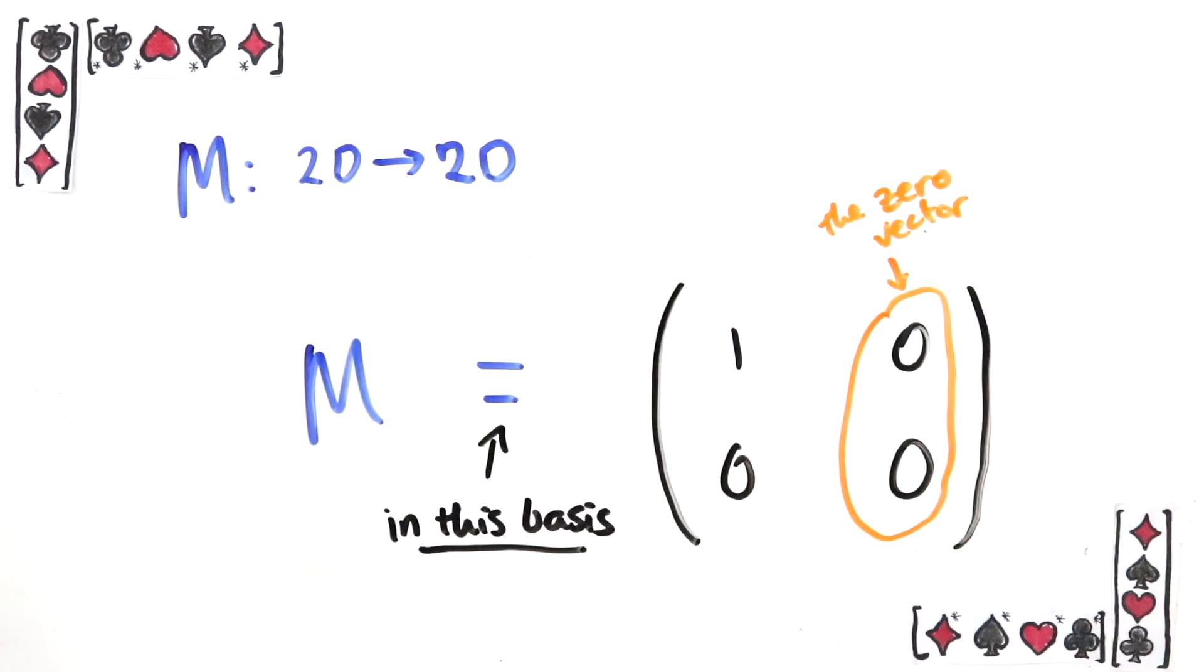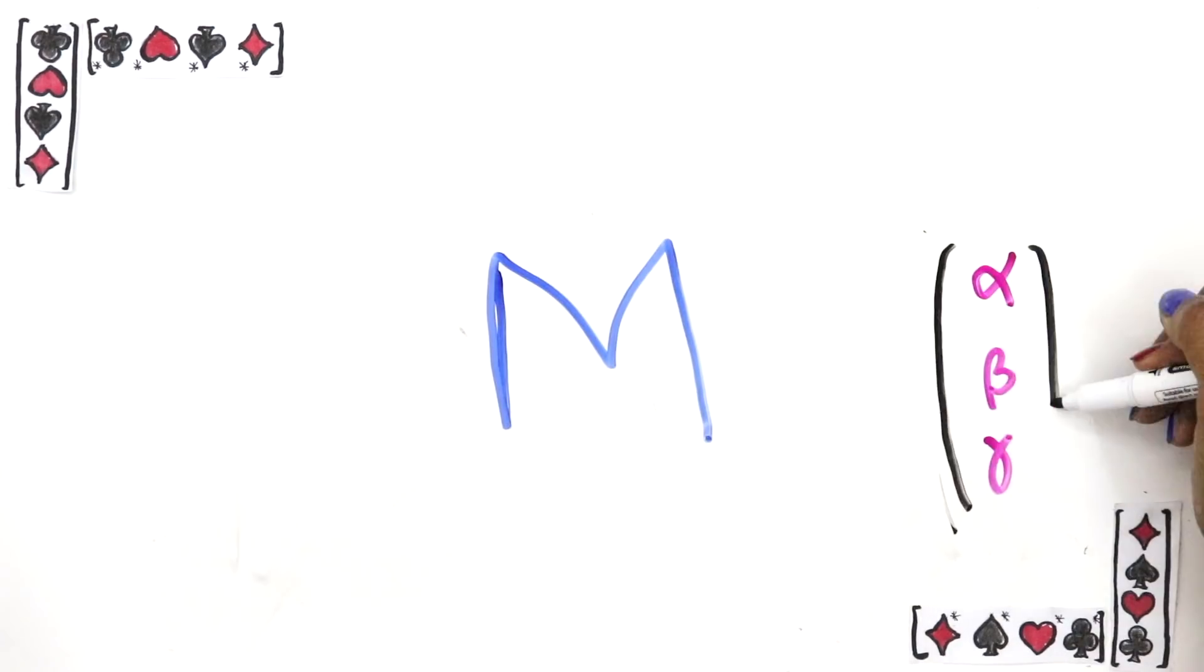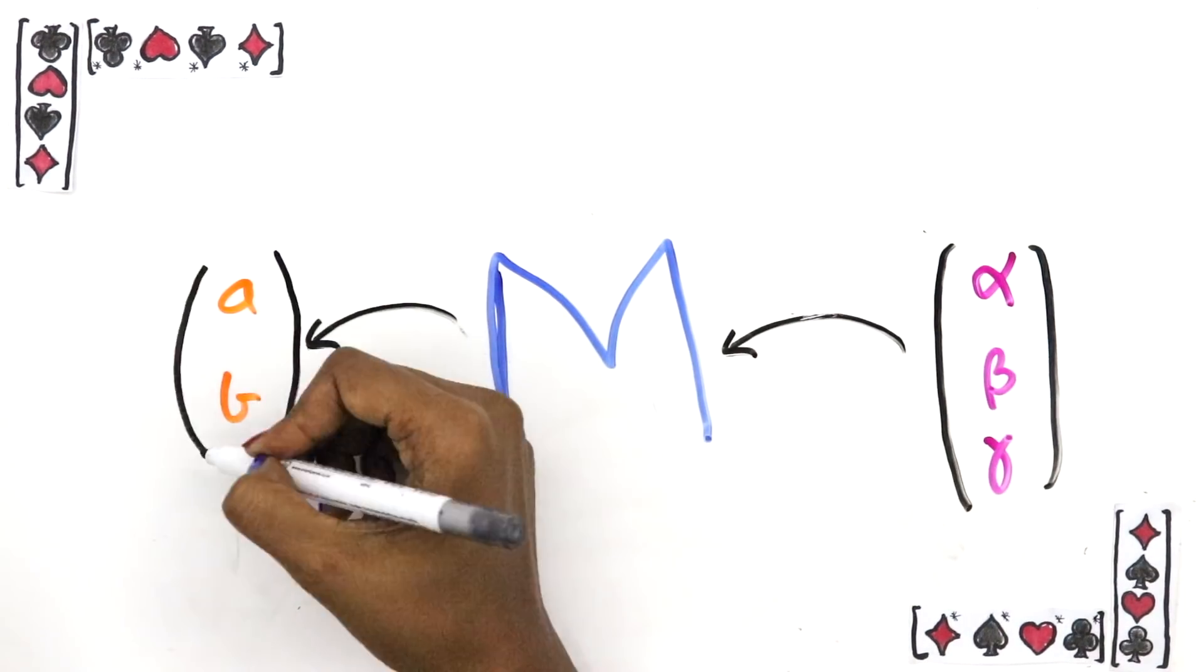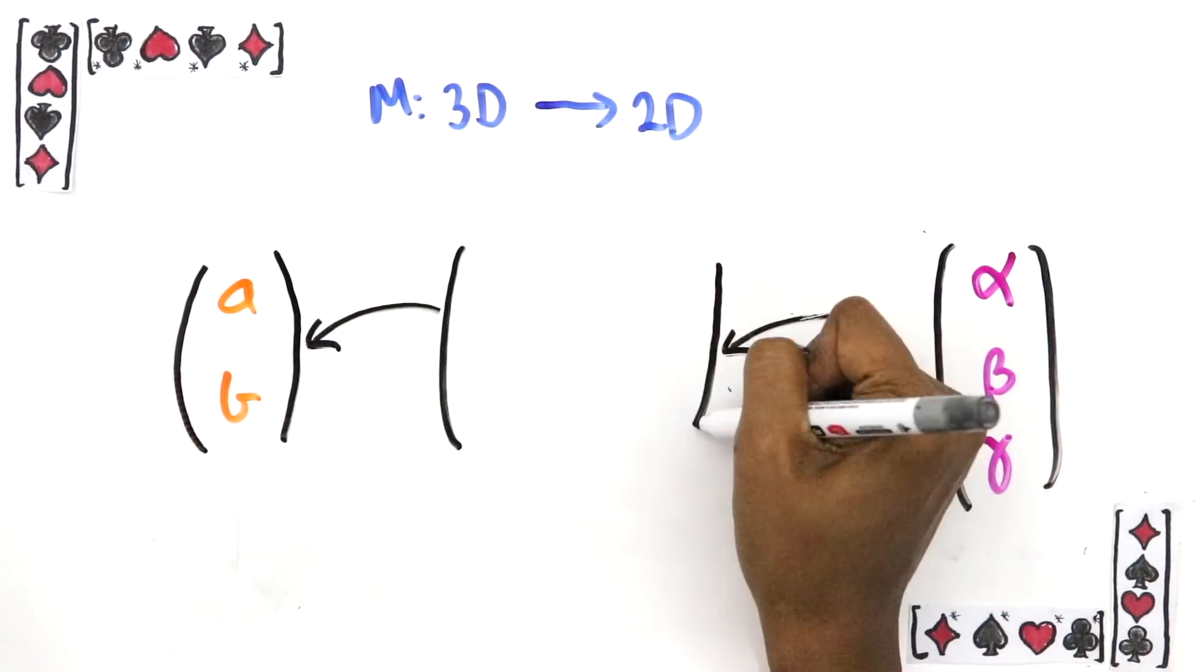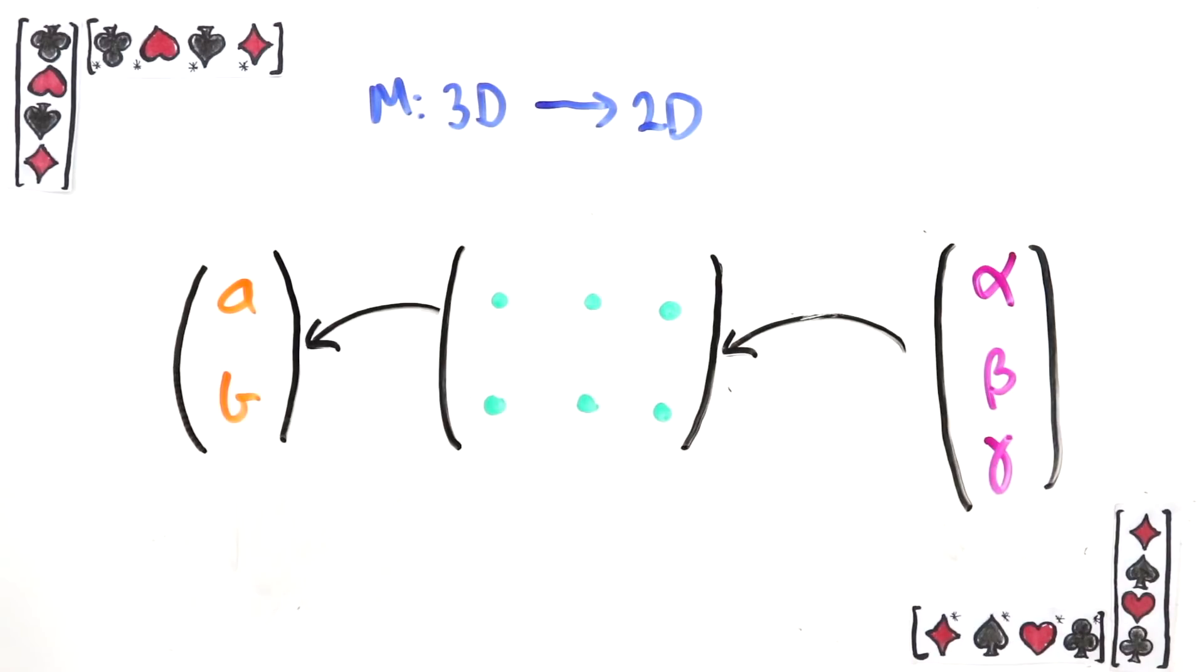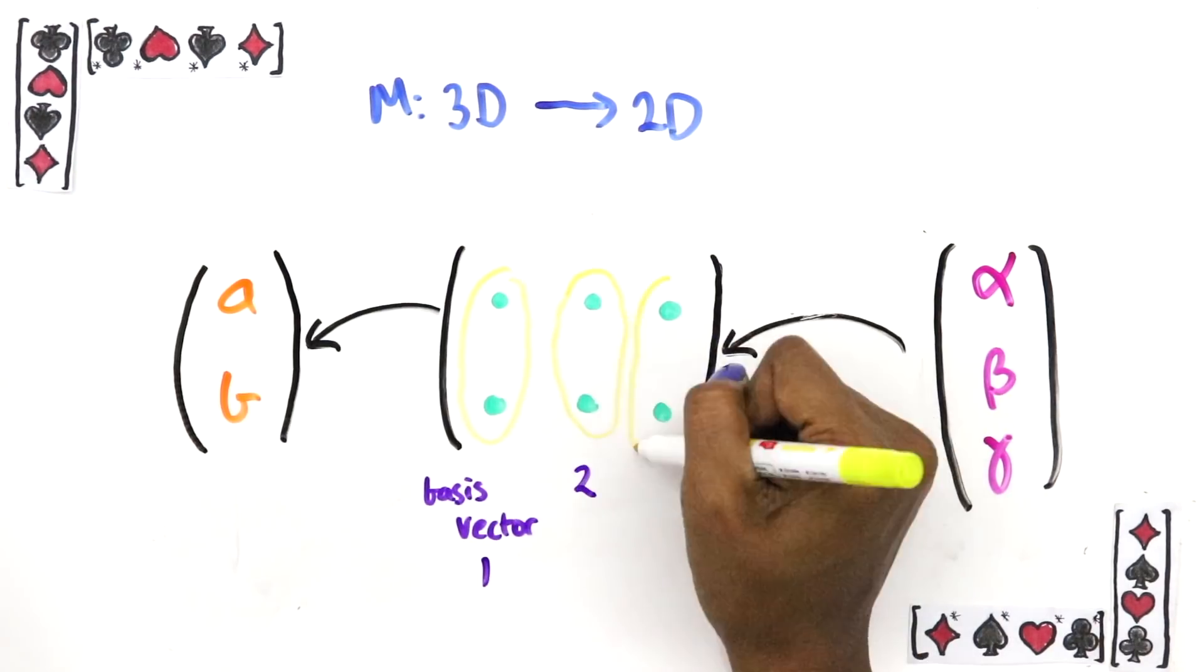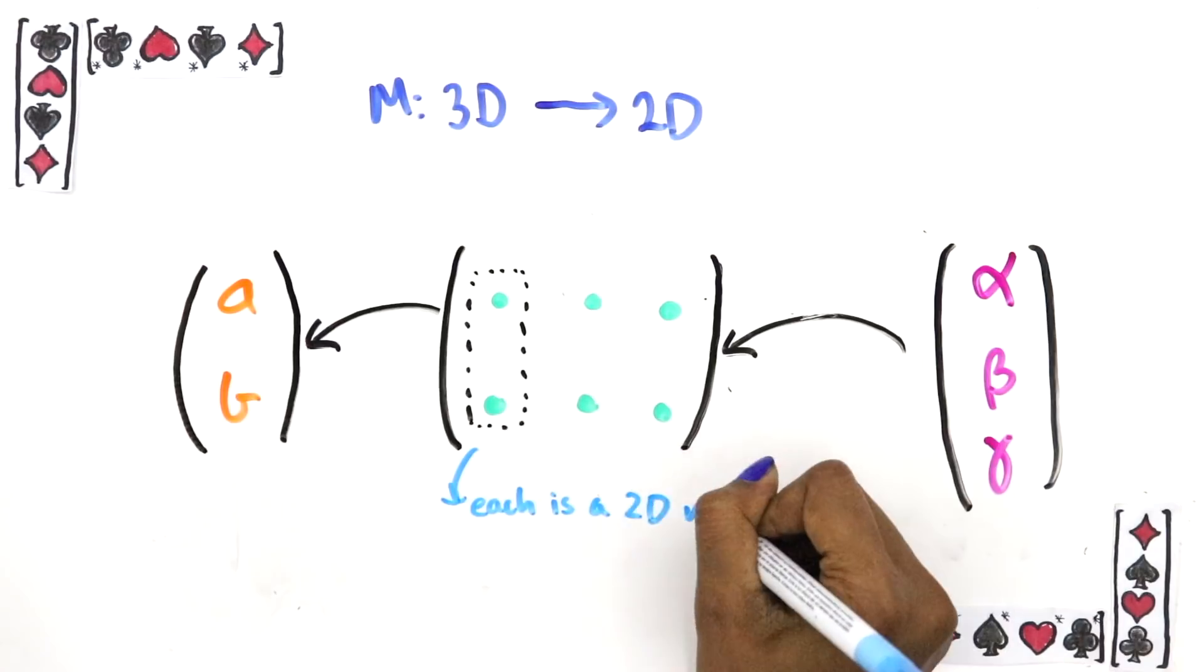By the way, your matrices definitely don't need to be square. The dimension of the matrix tell you about the dimension of the vectors it eats versus the dimension of the vectors it spits out. In this example, the matrix takes 3D vectors and gives back 2D ones. Then its shape has to be this because it has three rows, representing what the matrix does to the three basis vectors of the initial space, and two columns because each of the basis vectors becomes a 2D vector.